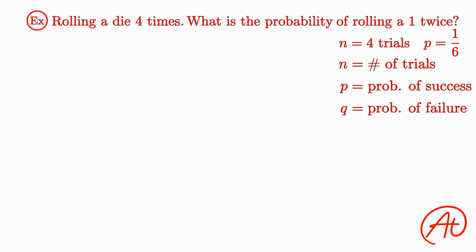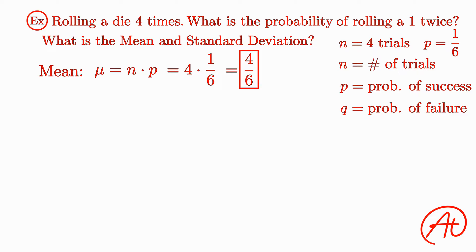And just for fun, let's also find the mean and standard deviation of this scenario. Once again, to find the mean, we multiply n times p, or for our example, 4 times 1/6, to get that mu equals 4/6. And what this means is that during your 4 rolls, you can expect to roll a 1 four-sixths times. And this might seem a little strange, because you can't roll a 1 four-sixths of a time. But if you were to repeat this experiment of 4 rolls again and again, and average the number of times you rolled a 1 per experiment, the value you get would approach 4/6.